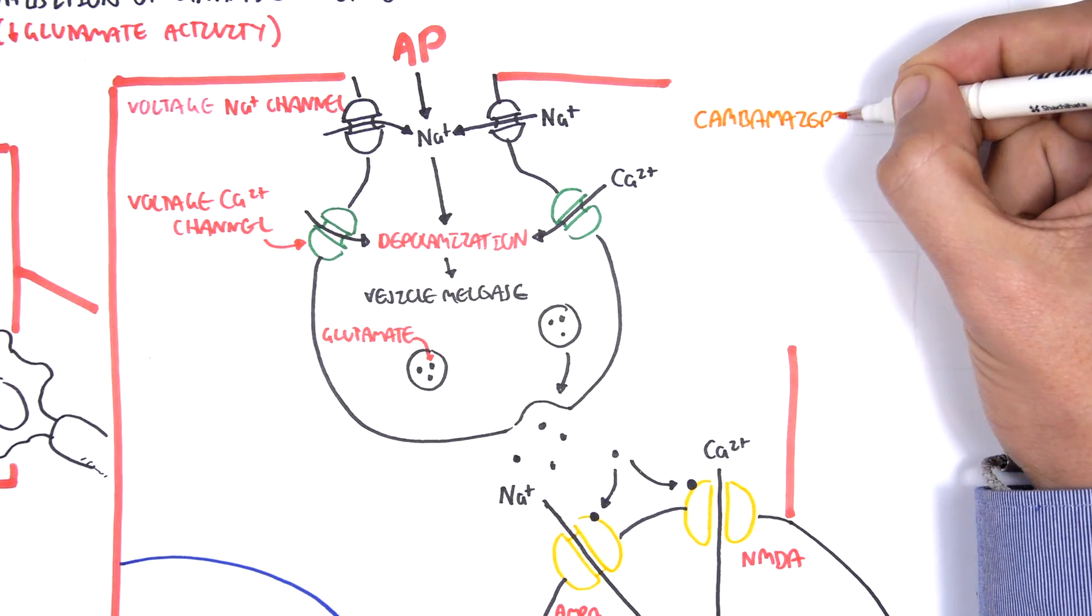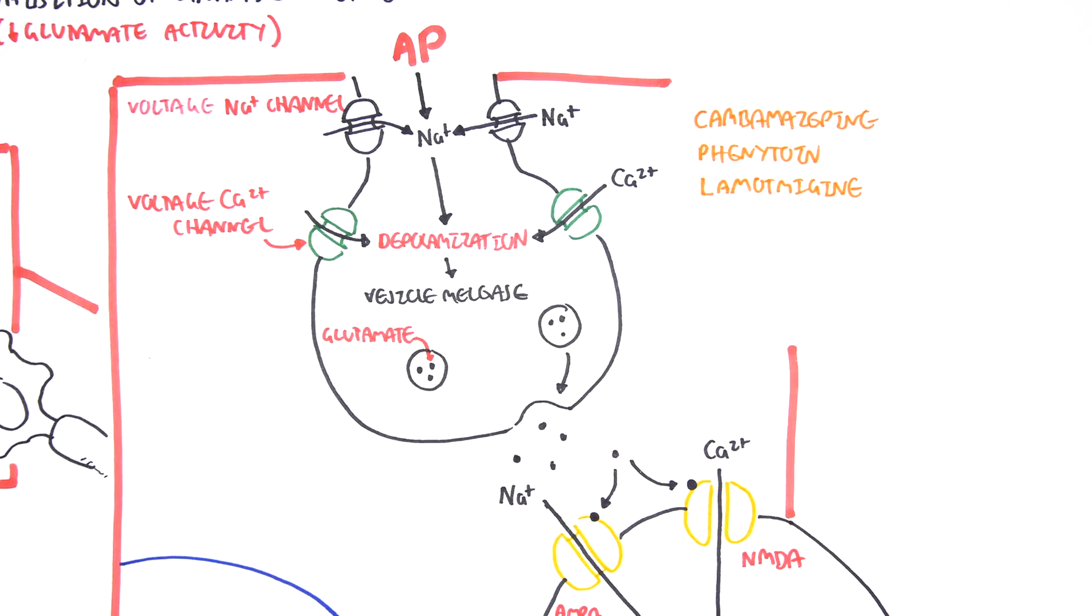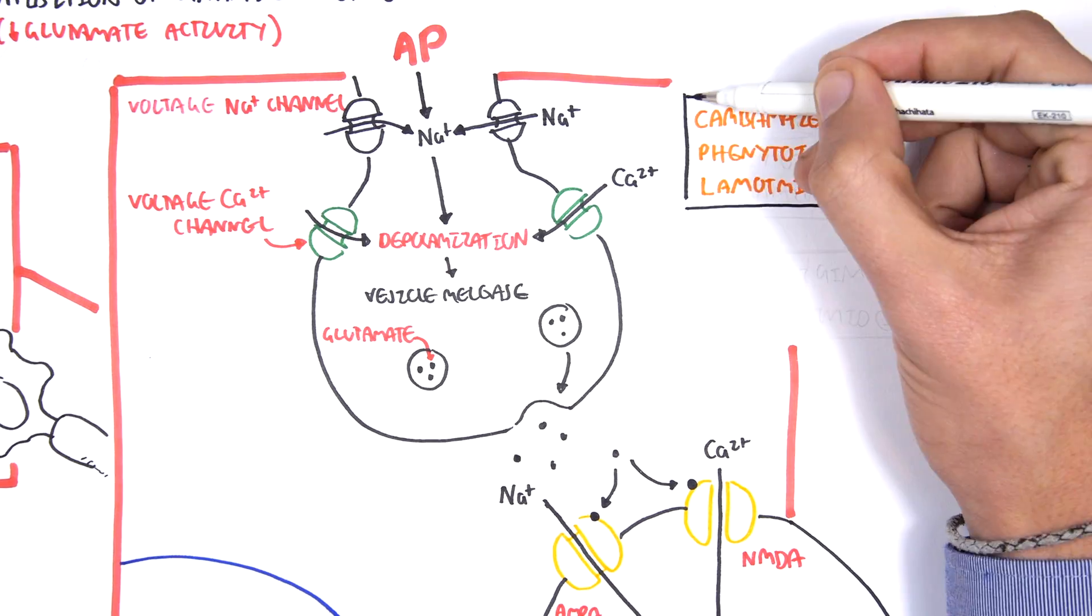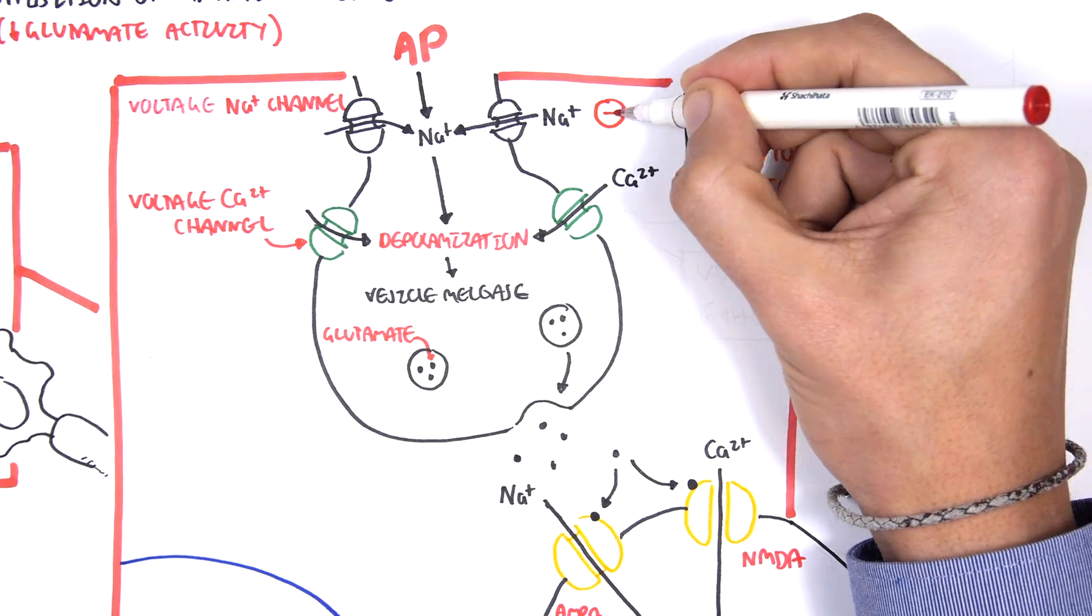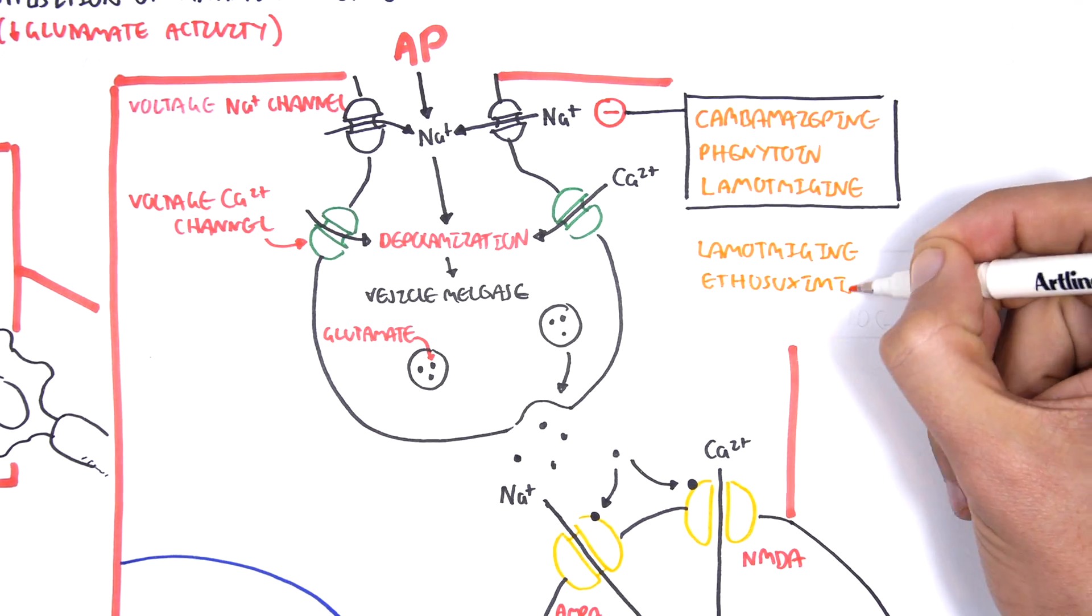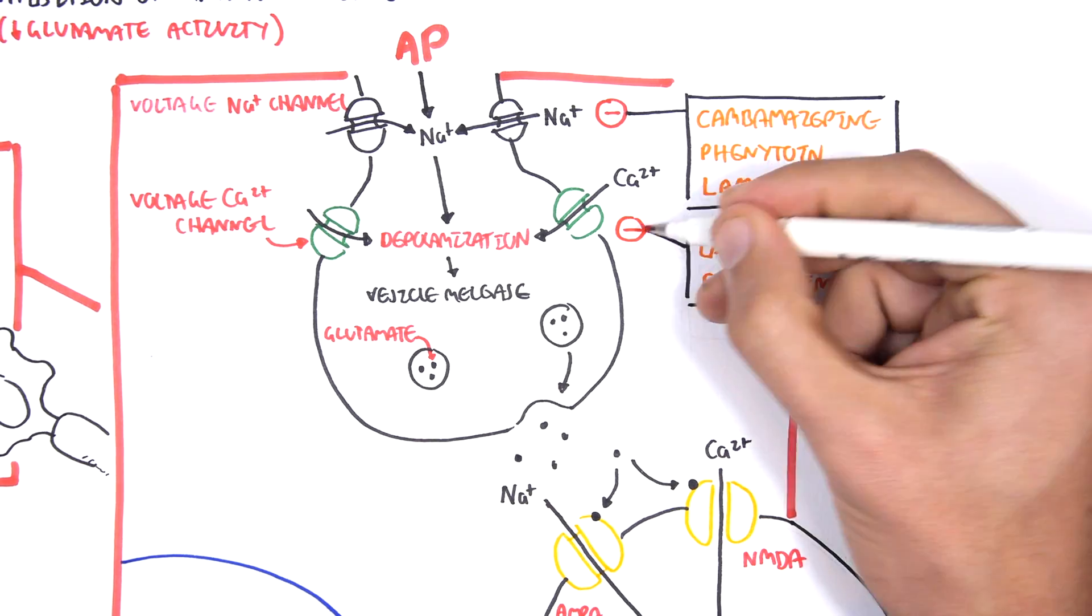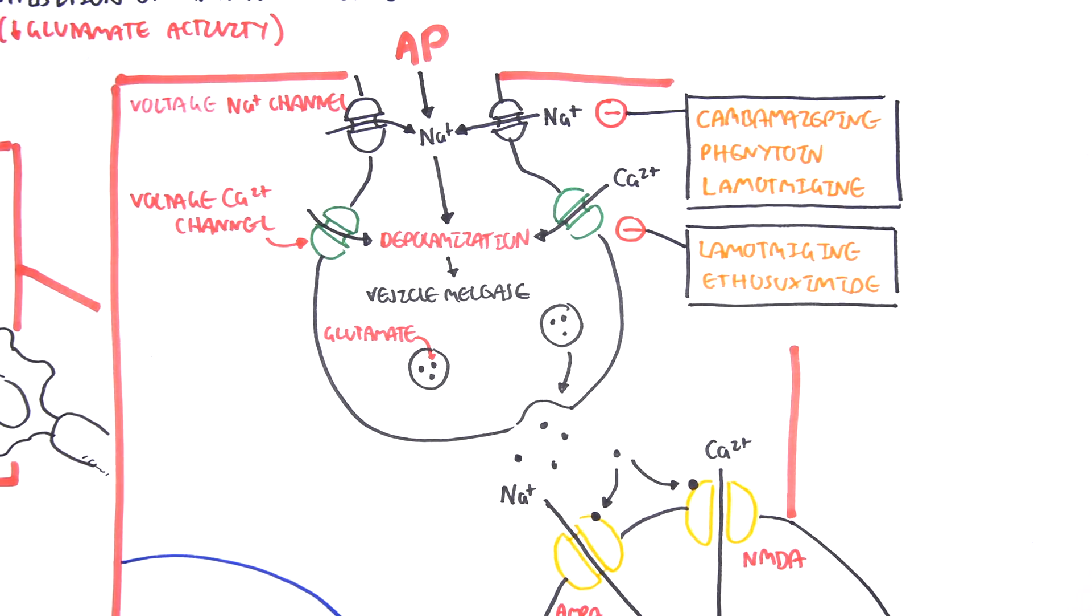Drawing these drugs in respect to this diagram, we have carbamazepine, phenytoin, and lamotrigine which inhibit the sodium voltage channels, thus inhibiting depolarization. Lamotrigine and ethosuximide inhibit the calcium voltage-gated channels, also inhibiting depolarization and stopping the glutamate activity or neuronal excitement.